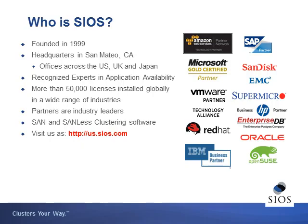SIOS, formerly known as Steel Eye Technologies, has been around since 1999 — well over a decade protecting mission-critical applications and data. We're a global organization headquartered in California with offices throughout the world, supporting thousands of customers protecting many different types of applications: SQL servers, file servers, Hyper-V configurations, Oracle, and more. We focus on two key areas: high availability and data replication, with solutions for both SQL Server on Windows and Linux systems, enabling HA in both SAN and SANless configurations.